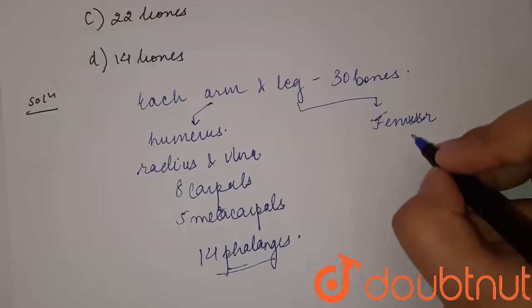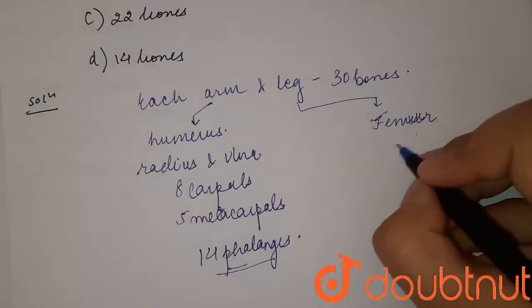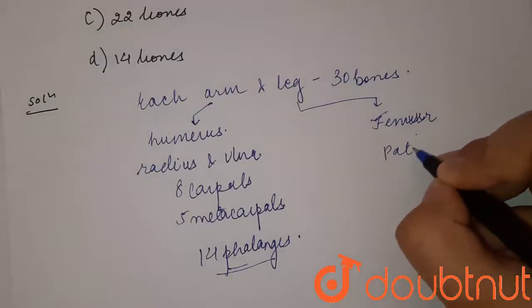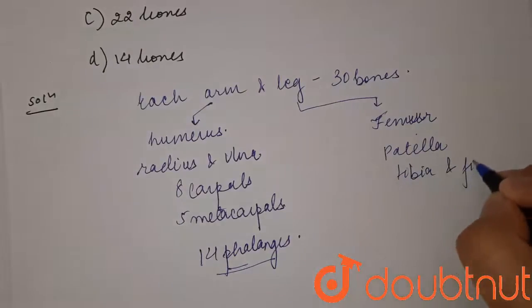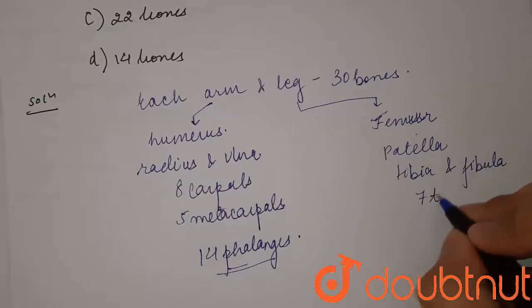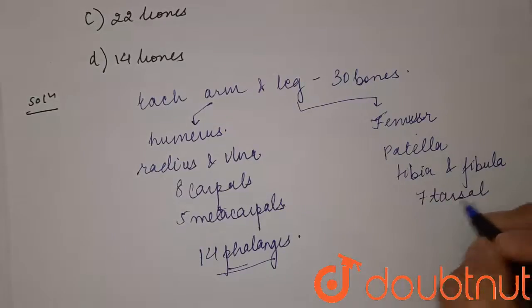Then there is patella in the knee, there is tibia and fibula, then we have the seven tarsals in the ankle, there are five metatarsals.